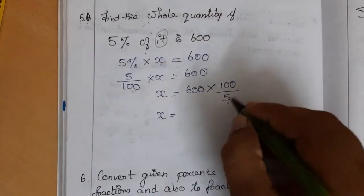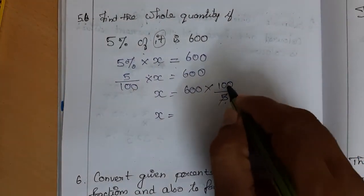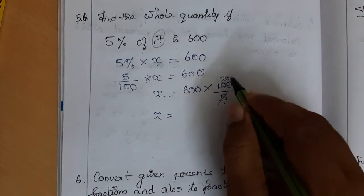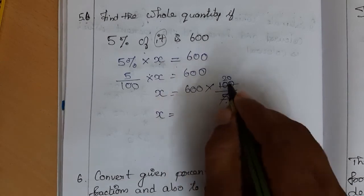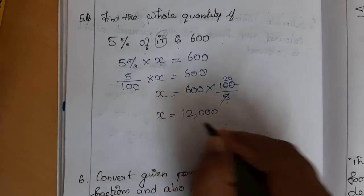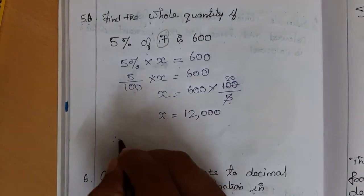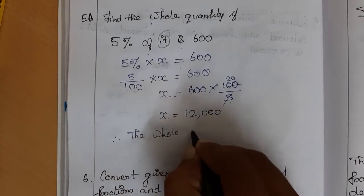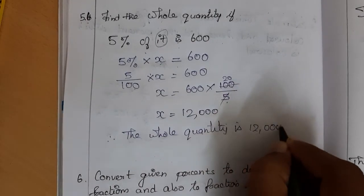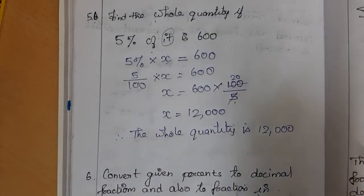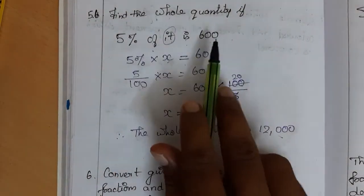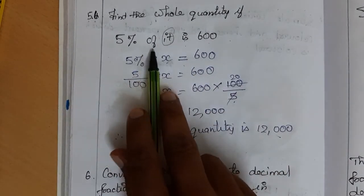Simplifying: 100 divided by 5 is 20, and 20 into 600 equals 12,000. So x equals 12,000. Therefore the whole quantity is 12,000. We can verify: 5 percent of 12,000 is 600. So when the percentage and the answer are given, we can find the whole quantity by considering it as x.